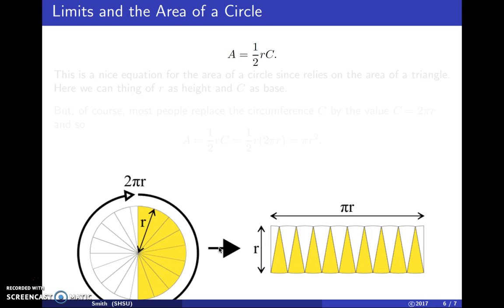The area of a circle is one-half the radius times the circumference. And this is supposed to look like the area of a triangle, because it's related. One-half height times base.